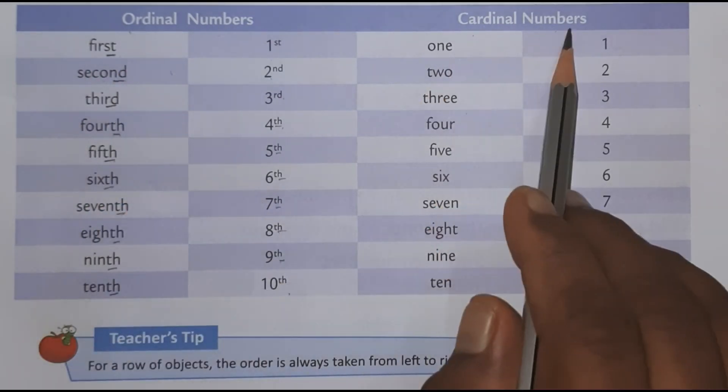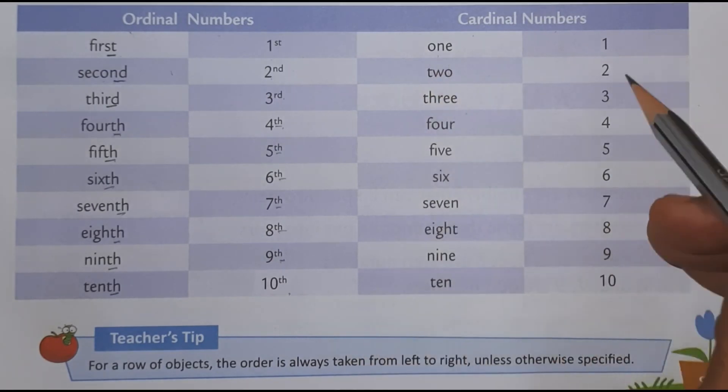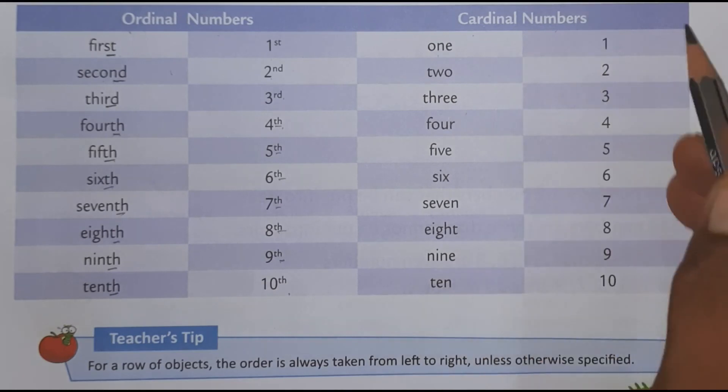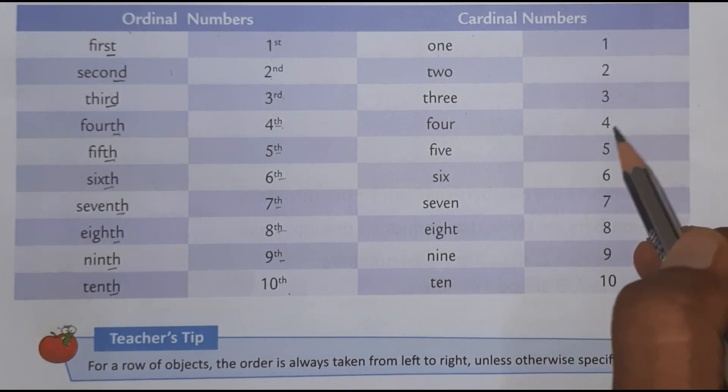Now here is cardinal numbers. Cardinal numbers is same as we had done in last class. In our last class. One, two, three, four.